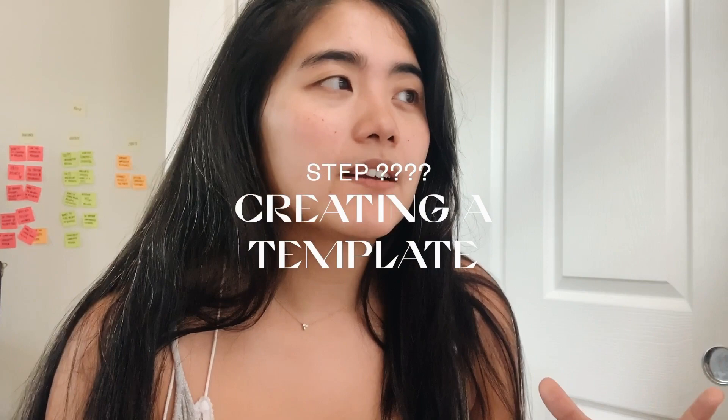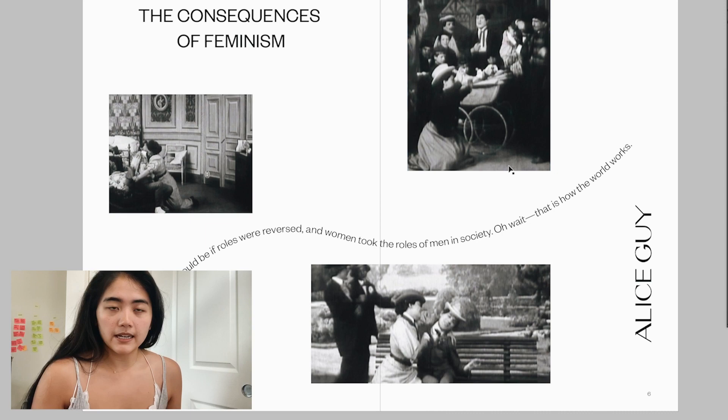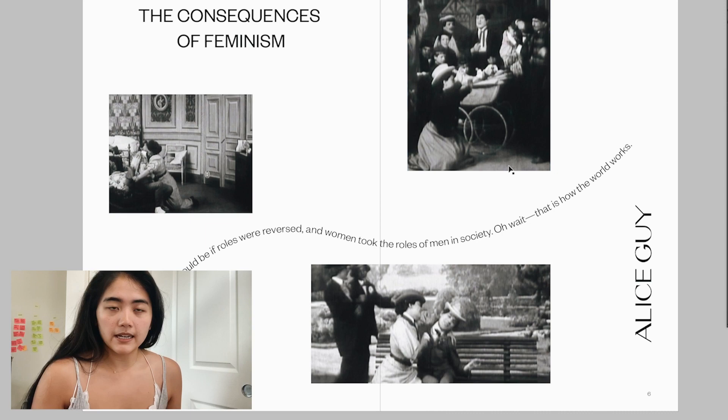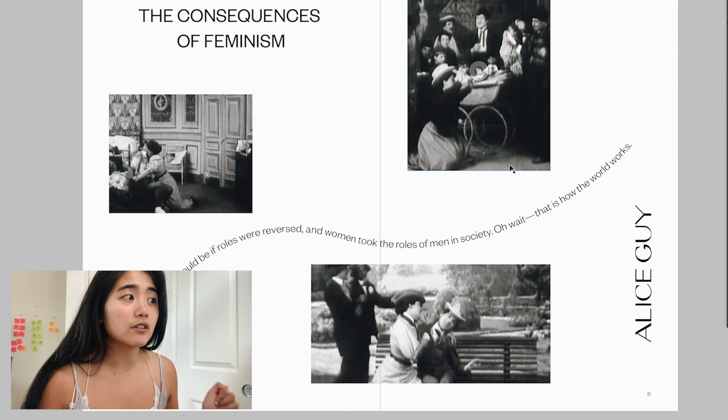The next step is figuring out some kind of master page template in InDesign, to have a framework to start implementing the different content for my zine. I already played around, and I wanted to start with my first film, which is 'The Consequences of Feminism' by Alice Guy. It's such a good film — it was made in 1906, and she was already addressing the patriarchy and how crazy life would be if women started to work or fend for themselves by essentially reversing the roles of men and women.